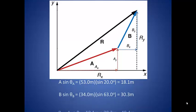To determine the y components of our a vector and b vector, we use the sine of the angles and add them together. So the sine of 20 degrees times 53 is 18.1. The sine of 63 degrees times 34 is 30.3 for a total of 48.4 for the resultant y vector.